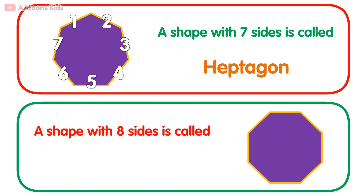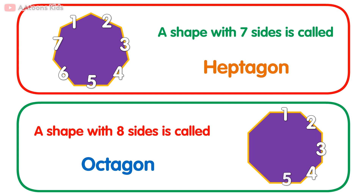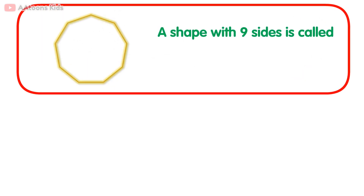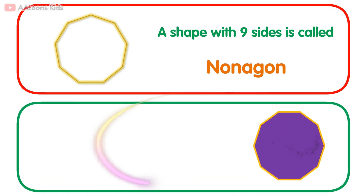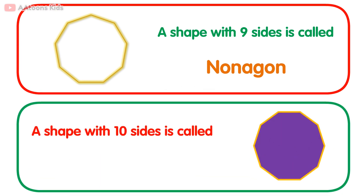A shape with eight sides is called an octagon: one, two, three, four, five, six, seven, eight. A shape with nine sides is called a nonagon. A shape with ten sides is called a decagon.